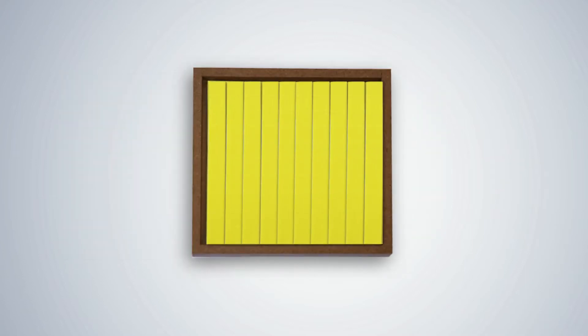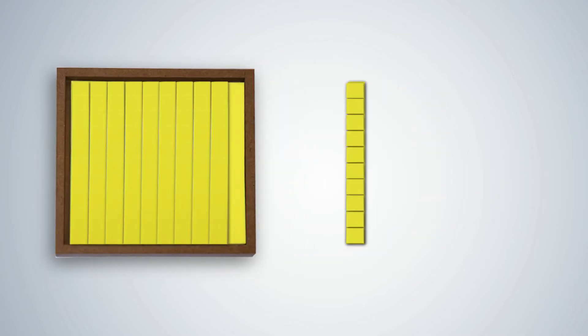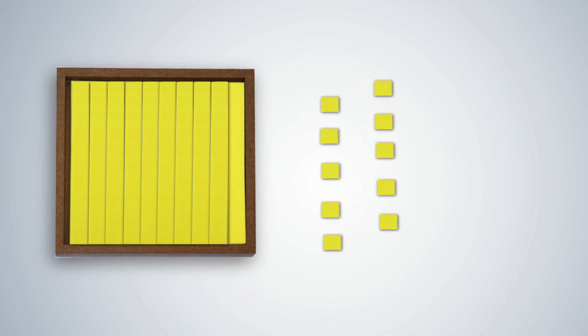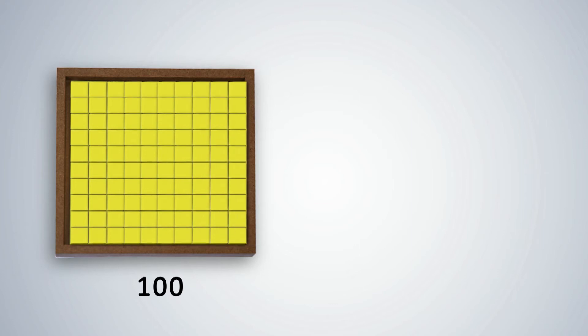Each of these 10 strips, when further divided into 10 equal parts, give 10 multiplied by 10, which is 100 equal parts. Each part is 1 hundredth of the whole, or 1 upon 100. It is also called 1 hundredth.